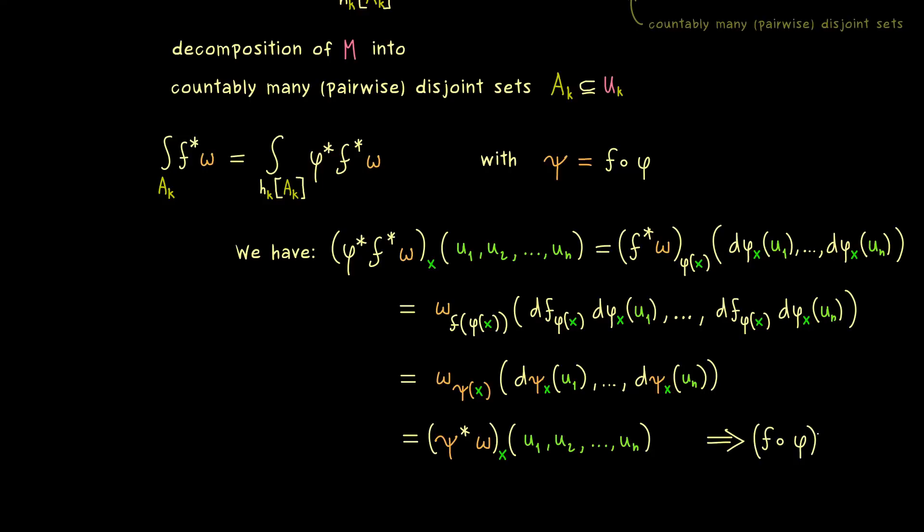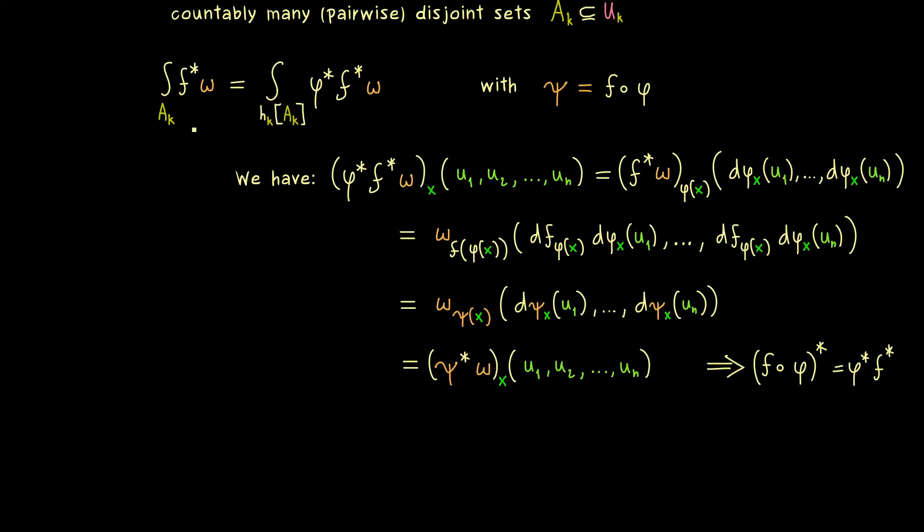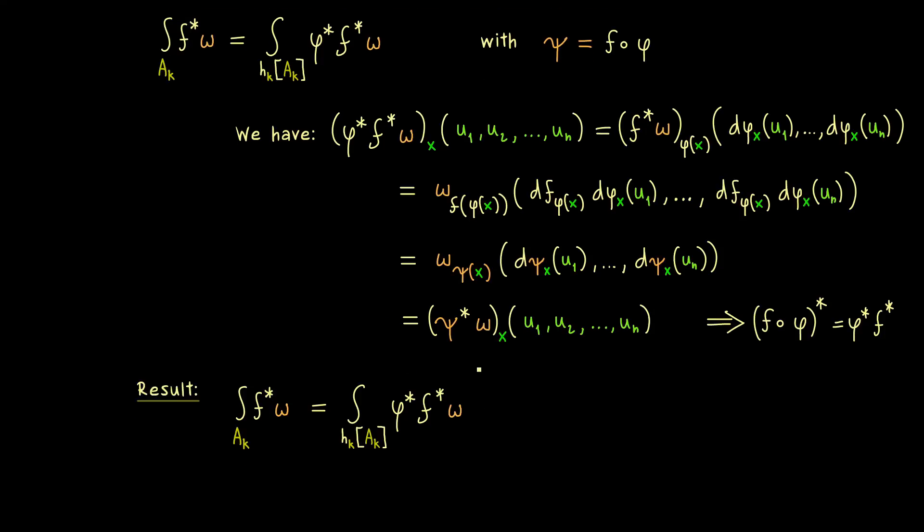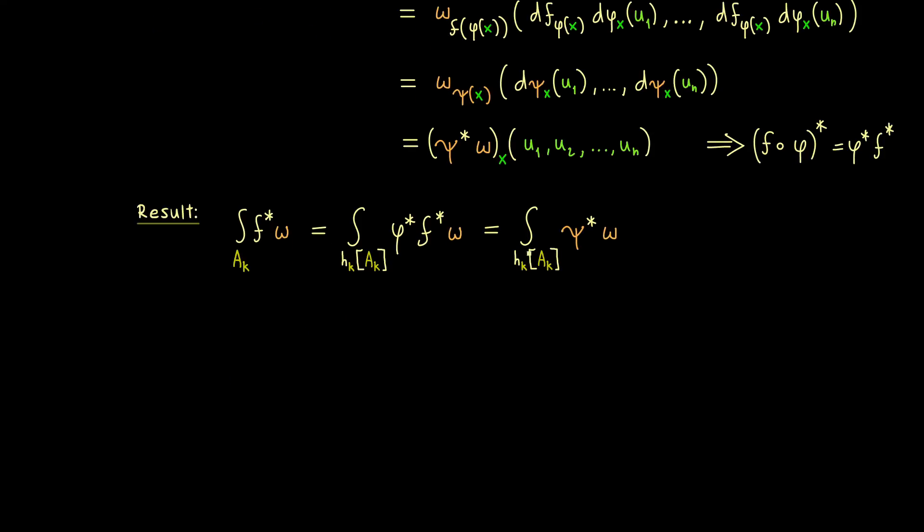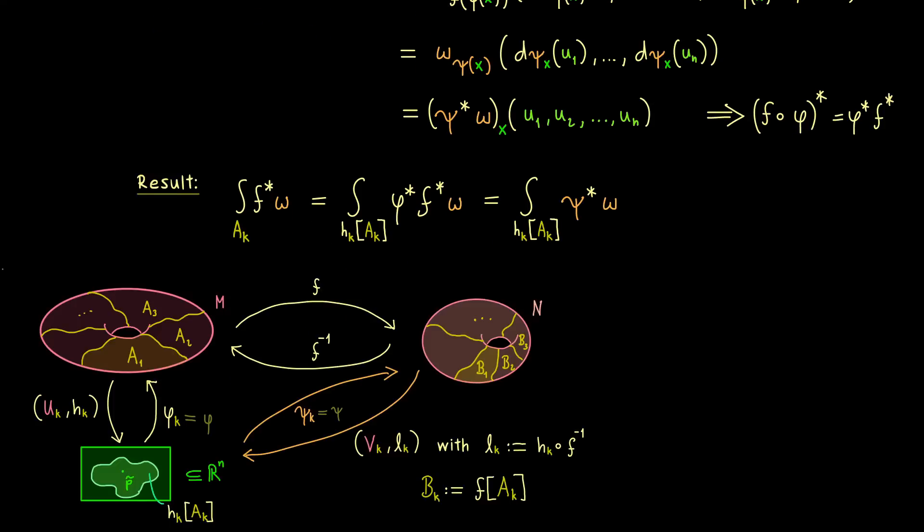Namely, f after phi with a star is equal to phi star f star. In other words, our substitution in our abstract integral is quite simple with this formula. And in addition we can also see our final result here. We simply see that we can rewrite our integral from before by using our psi star instead of the whole combination here. Therefore the only thing missing here and what we definitely have to change is the domain of integration.